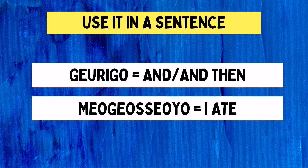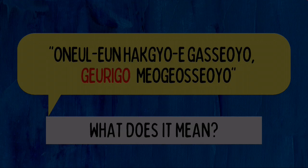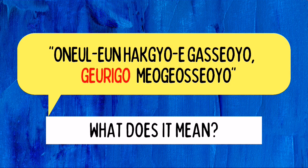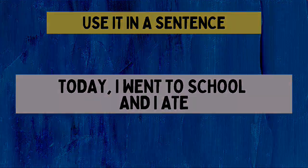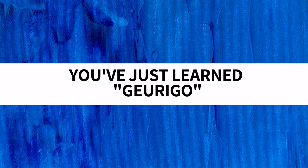So combining all parts together, the full sentence means: Today, I went to school, and then I ate. Looking back at the example sentence at the start of the video — Onulun hakyo-e gaso-yo, kurigo mogo-soyo — we now know it simply means: Today, I went to school, and I ate. And with that, you've just learned kurigo.